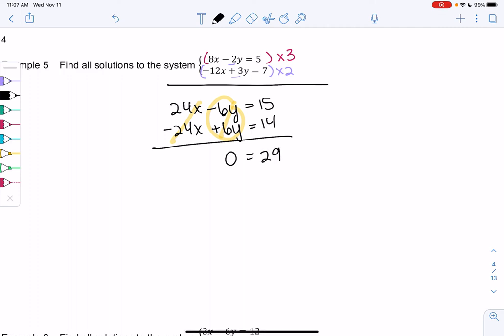So is this ever true? Will 0 ever equal 29? Nope. So this is what happens when you have no solution. Start plugging in numbers. There's absolutely no way you can do 8x minus 2y equals 5. And then it also works for negative 12x plus 3y equals 7. It's basically saying 0 never equals 29.